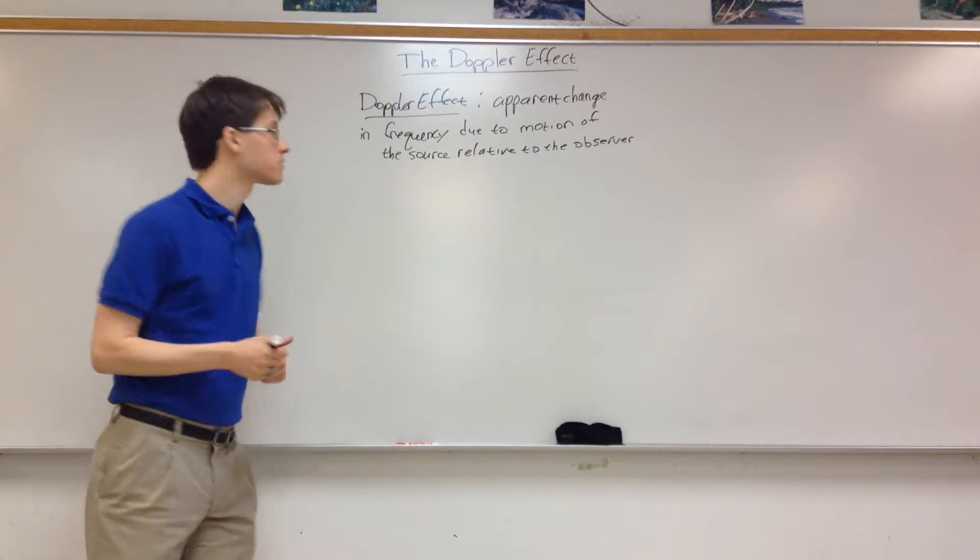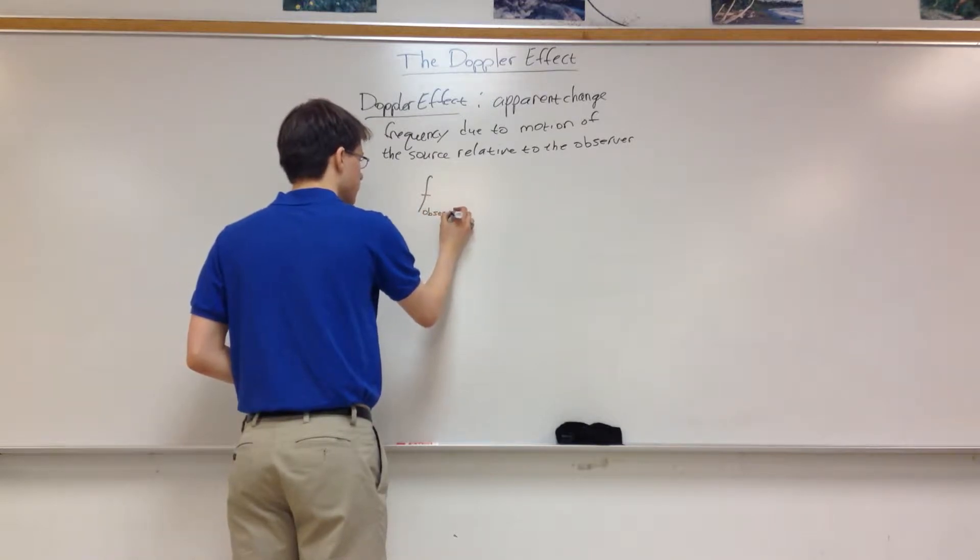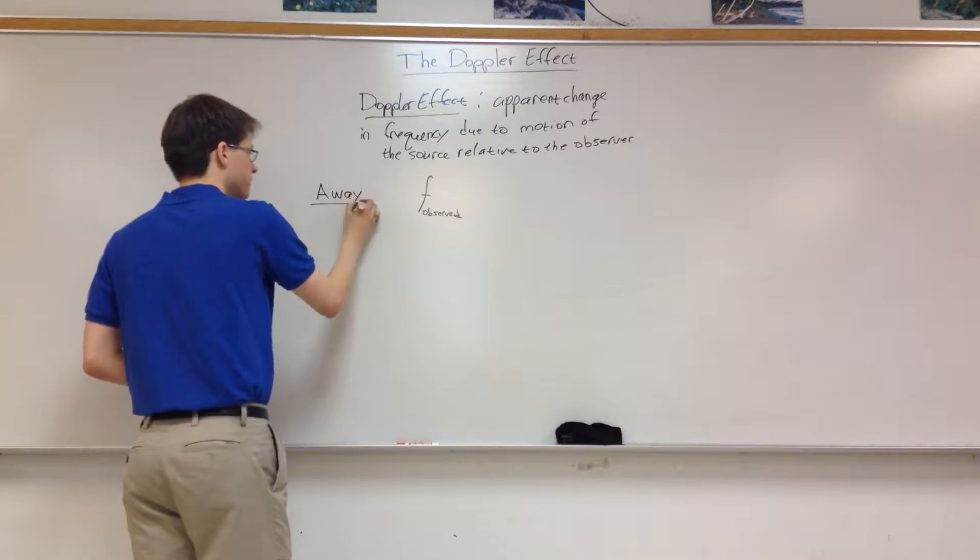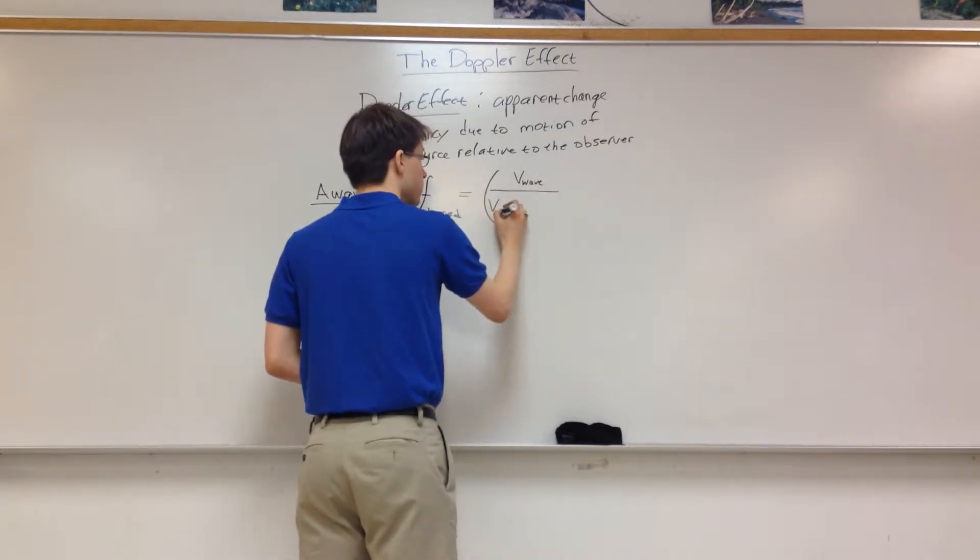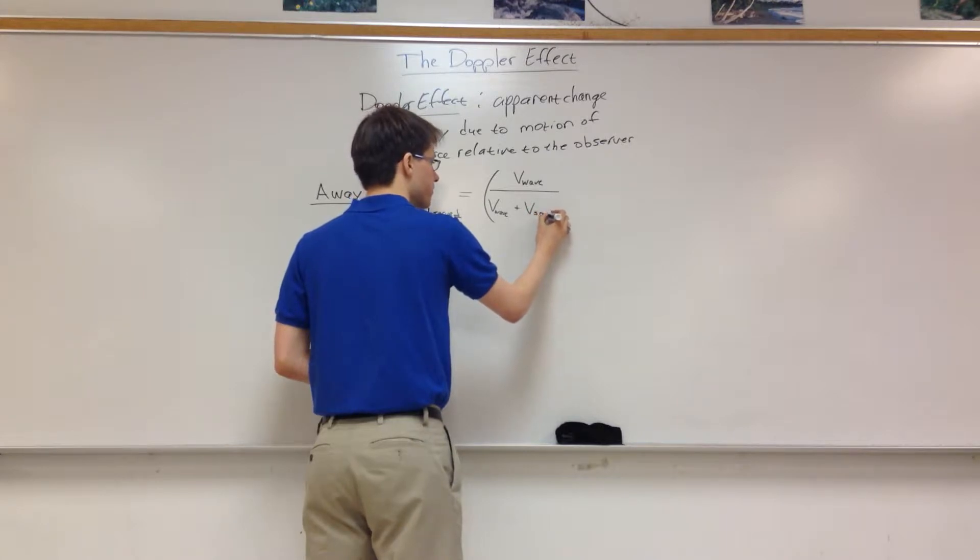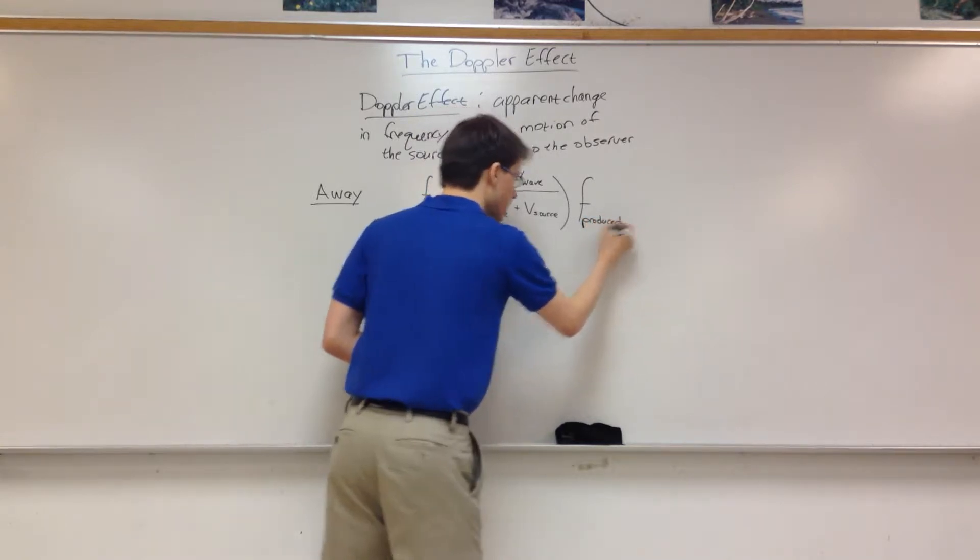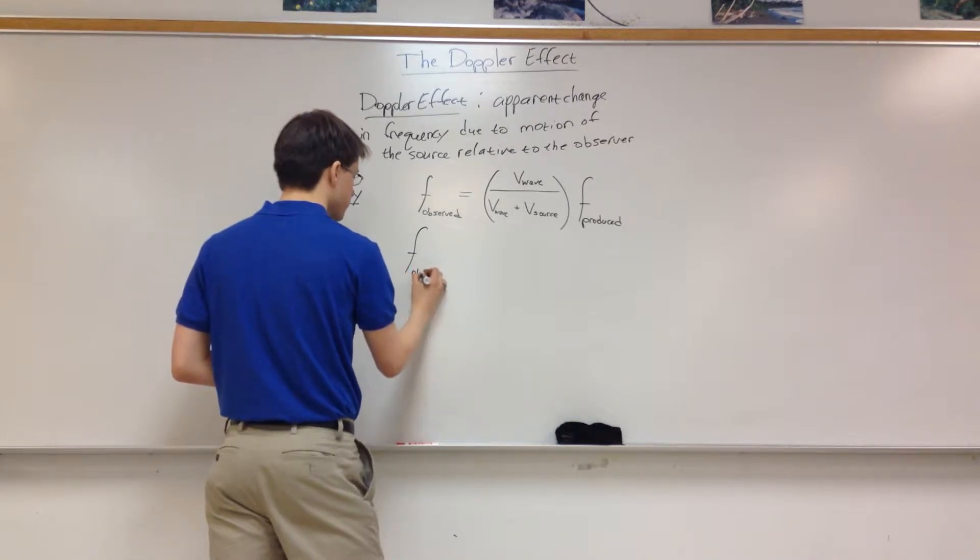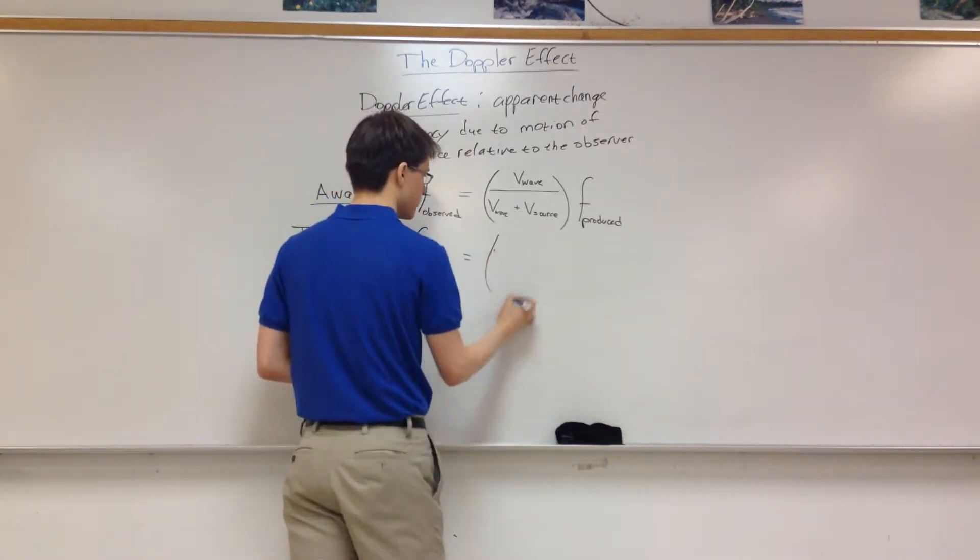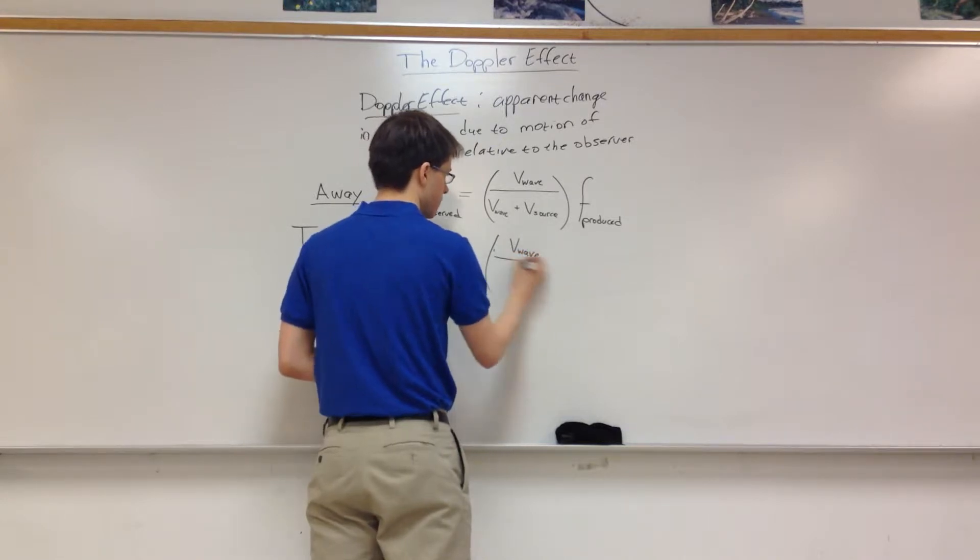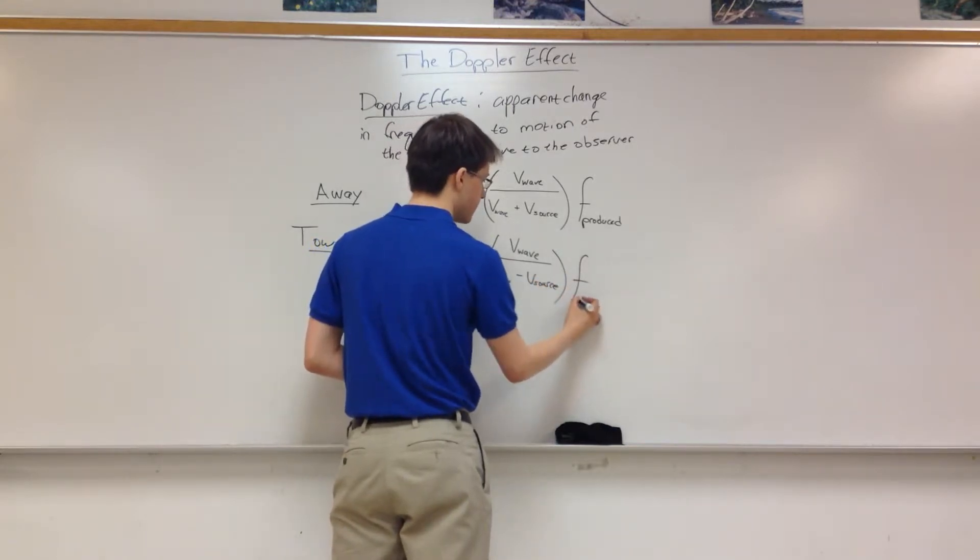We need the frequency that is being observed. This will be if it's moving away. The frequency being observed is going to be equal to the velocity of the wave itself divided by the velocity of the wave itself plus the velocity of the source. And this is going to be multiplied by the frequency produced. And I'll kind of walk through what this is saying. So here the frequency observed, in the case when it is going towards you, is going to be the velocity of the wave over the velocity of the wave minus the velocity of the source. So we're just going to flip one sign. And this will be multiplied by the frequency produced.